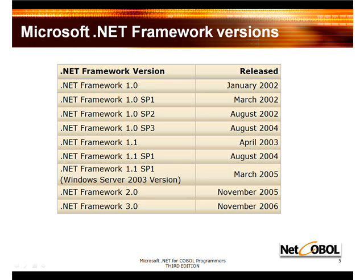The 1.1 release of the framework was also included with the second release of Microsoft Visual Studio .NET 2003. And this version of the framework was also the first version of the .NET framework to be included as part of a Windows operating system — specifically Microsoft Windows Server 2003. In January of 2006, Microsoft released the .NET Framework 2.0. This version was also released with Microsoft Visual Studio 2005, Microsoft SQL Server 2005, BizTalk 2006, and shipped with Microsoft Windows Server 2003 Release 2.